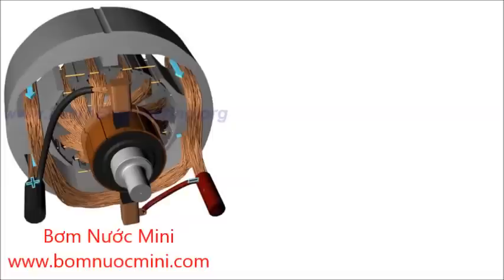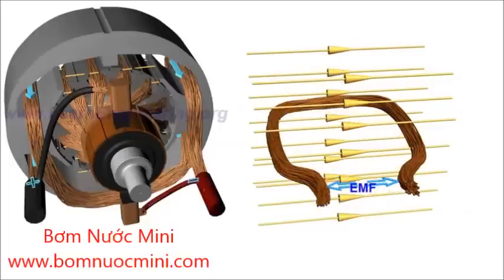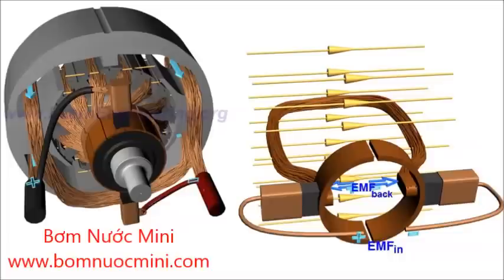A rotating loop in a magnetic field will produce an EMF according to the principle of electromagnetic induction. The case of rotating armature loops is also the same. An internal EMF will be induced that opposes the applied input voltage.